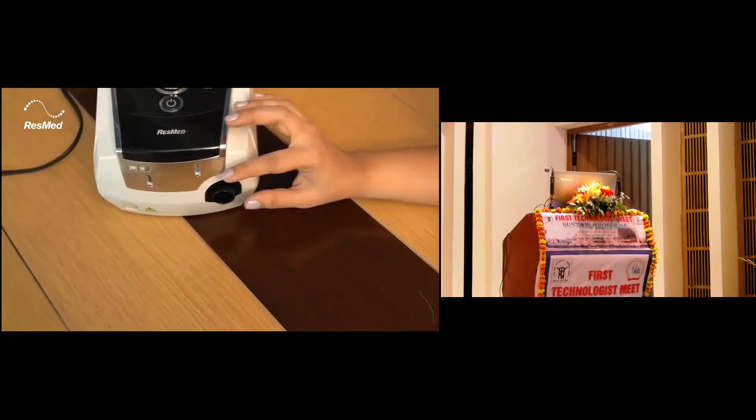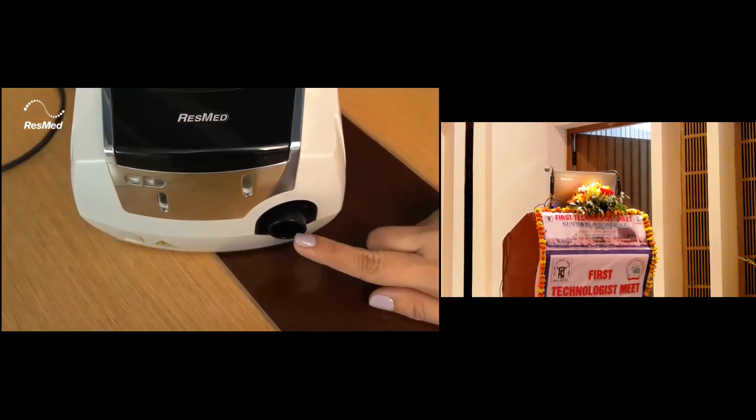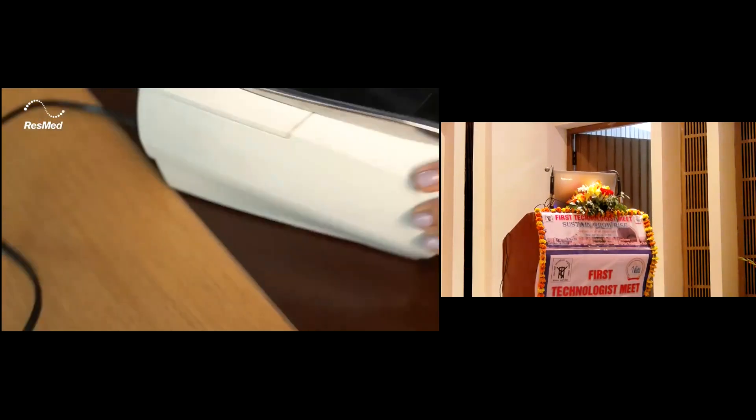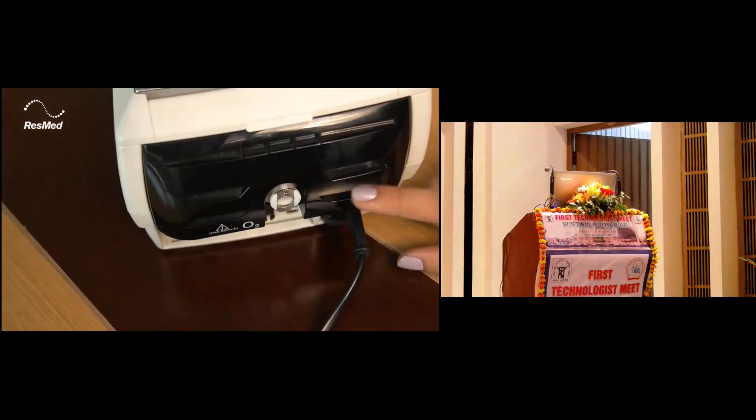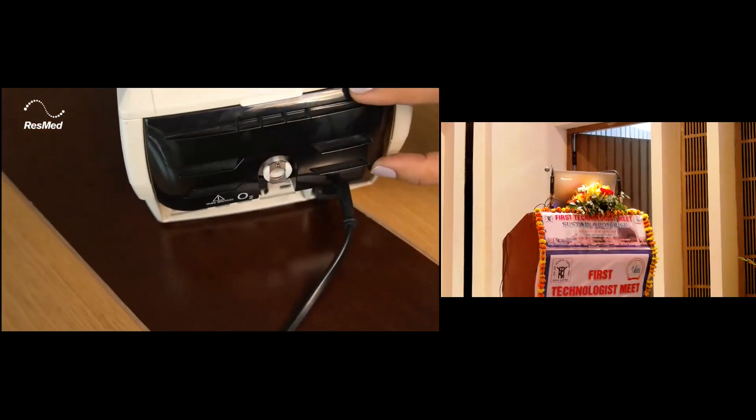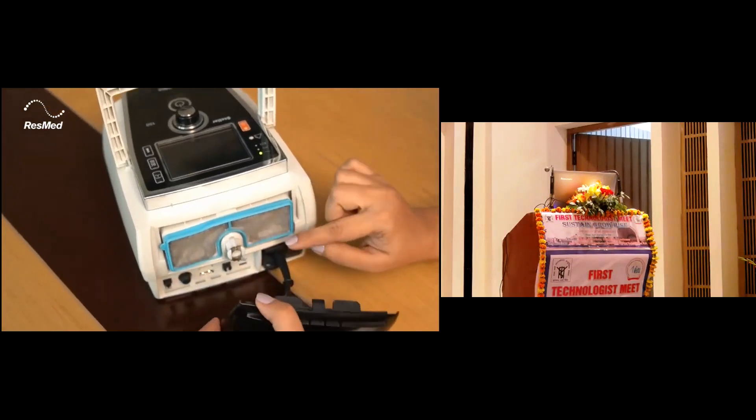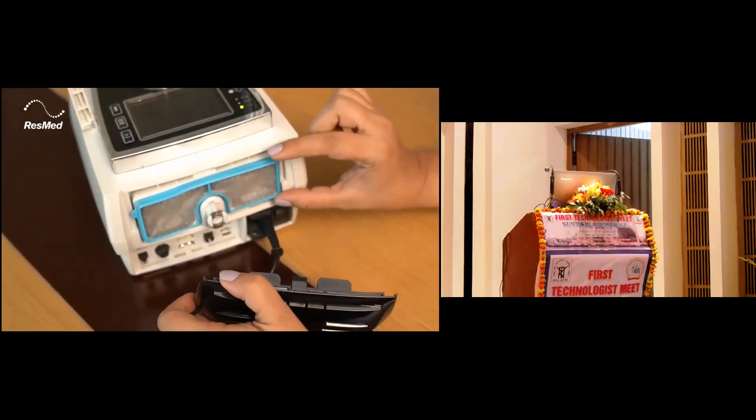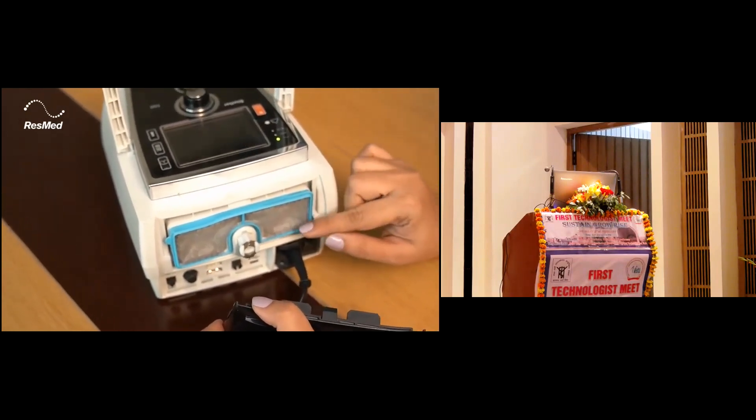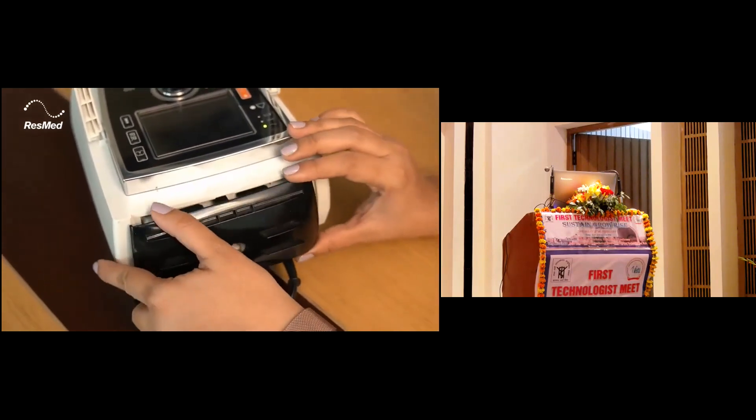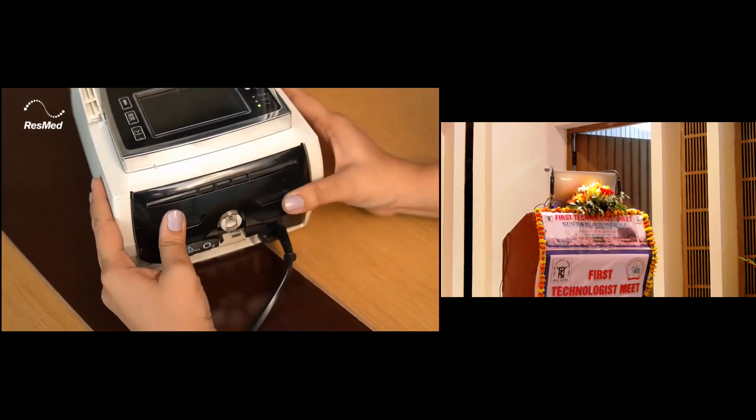In the front part of the Stellar you have the inspiratory port. At the back of the Stellar, we have the air inlet. Behind this is the air filter, which you can remove and see here. This has to be changed every 6 months, or instantly if there's any discoloration. Every week it has to be dabbed and closed.